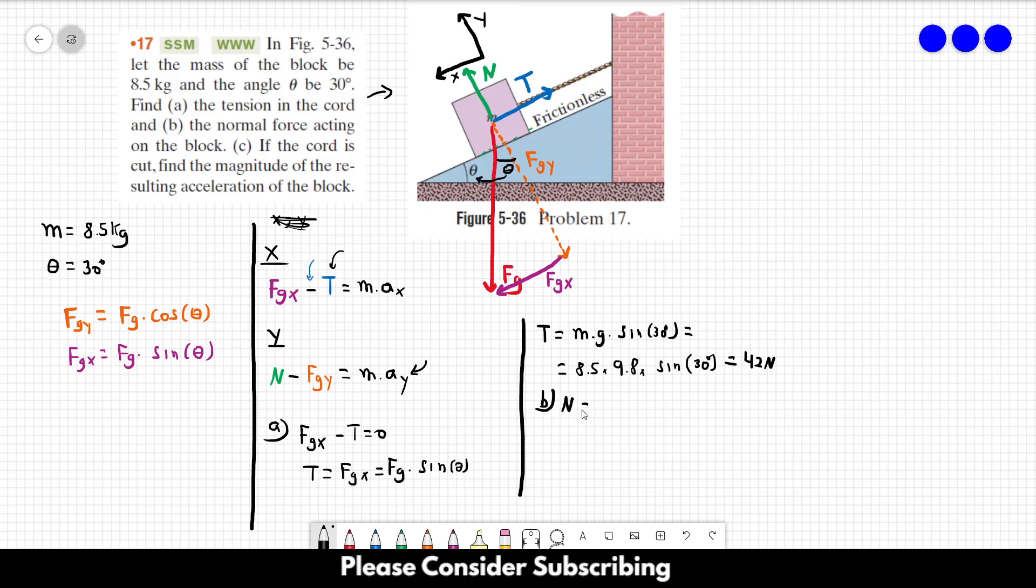So N = FG_Y, which is m × g × cos(30°), and this will give us 72 newtons. So this is the answer of letter B. For letter C, we cannot assume anymore that a_x is equal to zero.